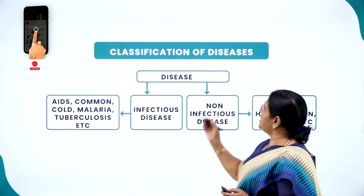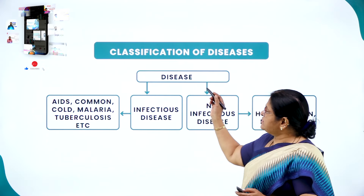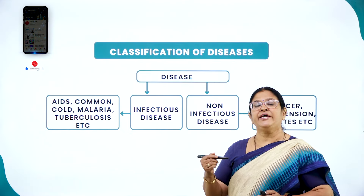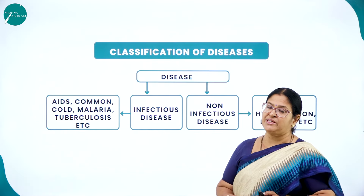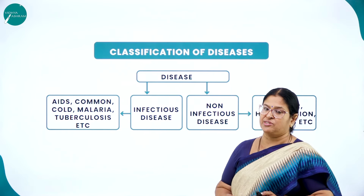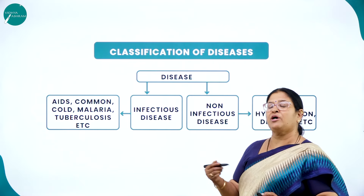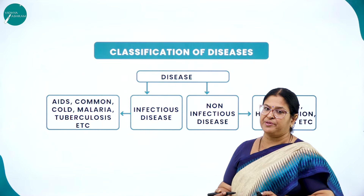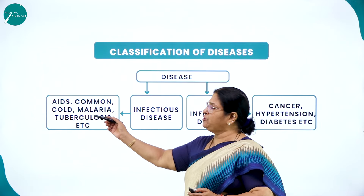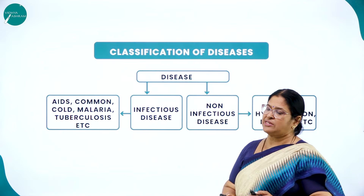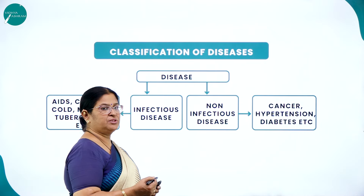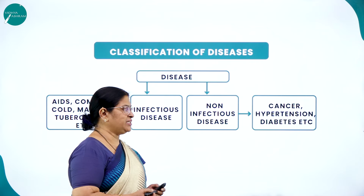Moving on to the flow chart: classification of diseases. Diseases have been broadly classified into infectious diseases and non-infectious diseases. Infectious diseases, also called communicable diseases, spread from person to person — examples include AIDS, common cold, malaria, and tuberculosis. Non-infectious diseases do not spread from person to person — examples include cancer, hypertension, and diabetes.